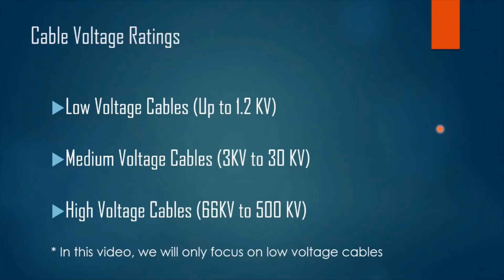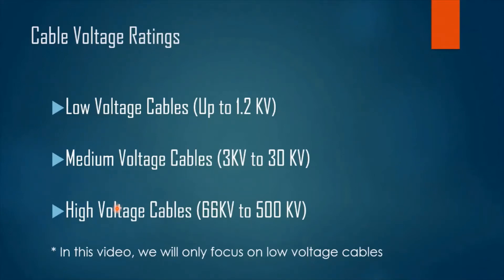Now let's know more about voltage ratings of a cable. We have three categories: the first is low voltage cables, which can withstand up to 1.2 kilovolts; the second is medium voltage cables, which can withstand 3 kilovolts to 30 kilovolts; and the third is high voltage cables, which can withstand 66 kilovolts to 500 kilovolts. For now, we will focus on the first category — low voltage cables.